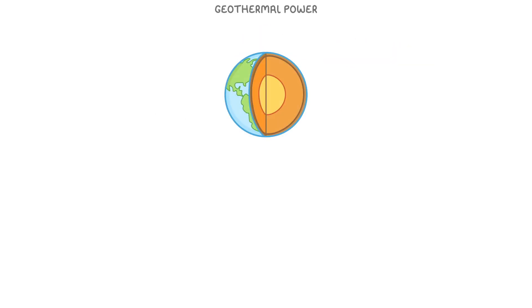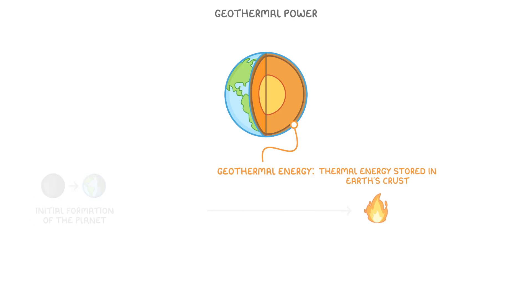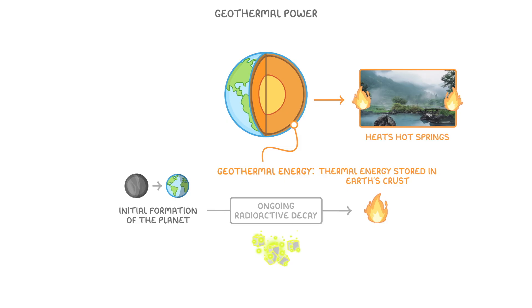Today's video is just going to be a quick one to cover how geothermal power works and its pros and cons. Geothermal energy is thermal energy generated and stored in the Earth's crust. This heat energy originated from the initial formation of our planet, and from the ongoing radioactive decay of materials like uranium deep inside the Earth. It's the same type of energy that heats hot springs across the world.